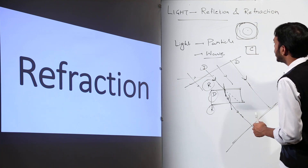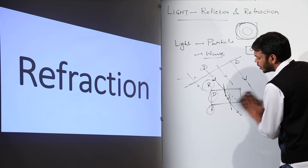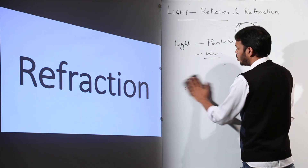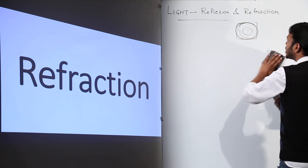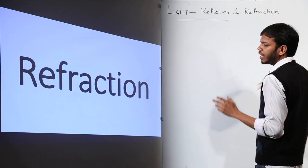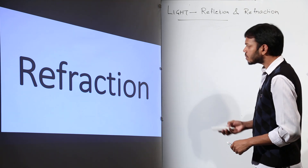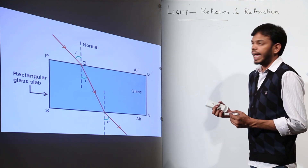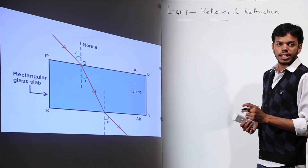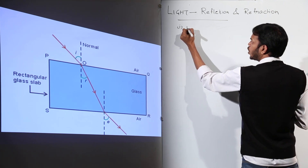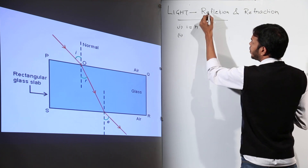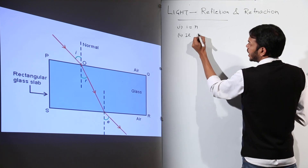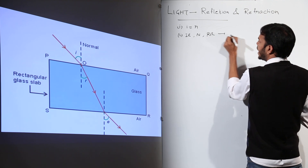So the basic reason refraction happens is the simultaneous effect of both particle and wave nature. But at the 10th grade level, saying that refraction happens due to difference in speed of light in different media is absolutely correct. Now let's move forward. This is a glass slab ray diagram. Recall the laws of reflection: angle of incidence equals angle of reflection.